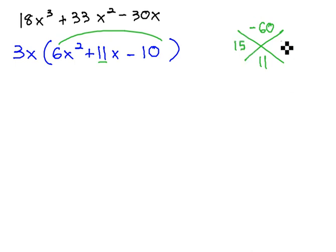60 is 15 times 4, and if the 4 is negative, then we should be able to split the middle term up into 15x and negative 4x.